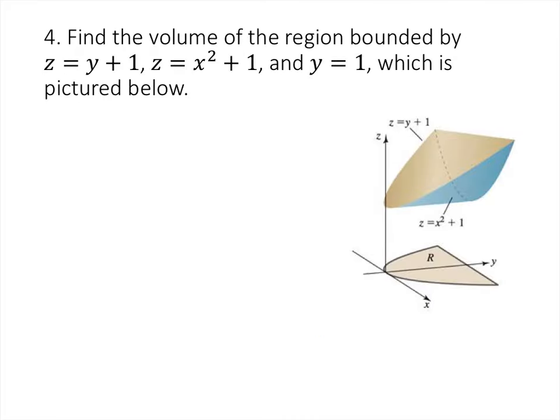Finally, we have a solid bounded by surfaces, and we can find the volume using a double integral by integrating the top surface minus the bottom surface over the region. The two surfaces are z equals y plus 1, and z equals x squared plus 1. To find where they intersect, we set them equal: y plus 1 equals x squared plus 1, which gives y equals x squared. So this parabola in the xy-plane is y equals x squared.